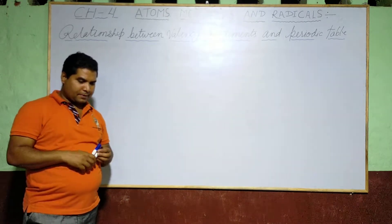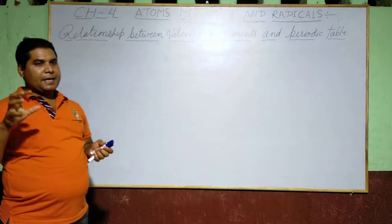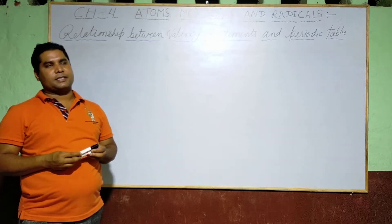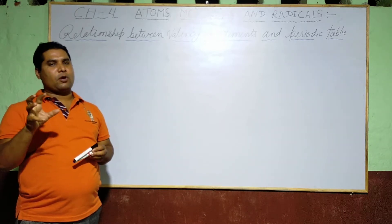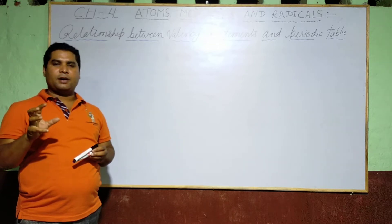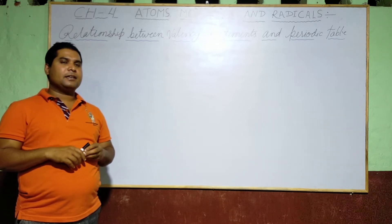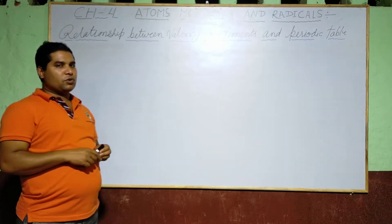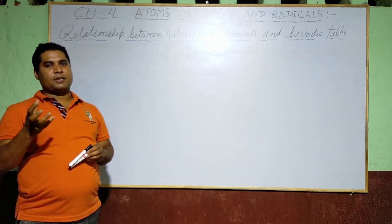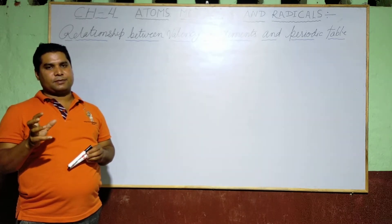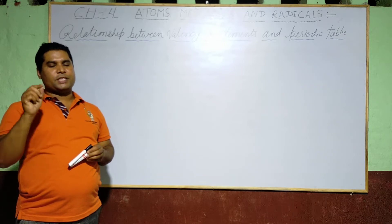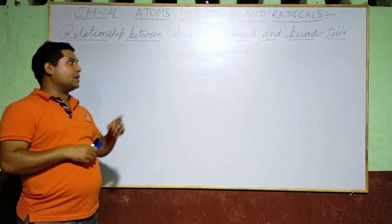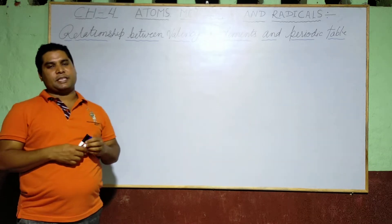In the previous video I explained you about balancing. What do you mean by balancing? The combining capacity of an element or of a radical is known as balancing. Elements are pure substances made up of a single kind of atom — as listed in the periodic table.